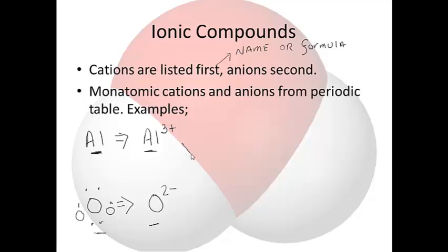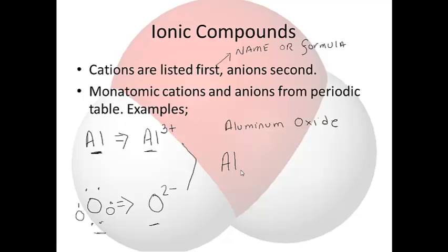Now I want to write the formula for aluminum oxide. I need the compound to be neutral — these two charges must add up to zero. As is, +3 and -2 do not add up to zero. So I ask: what do two and three have in common? Six. That means I will need two aluminums and three oxygens. The formula is Al₂O₃, which is called aluminum oxide.